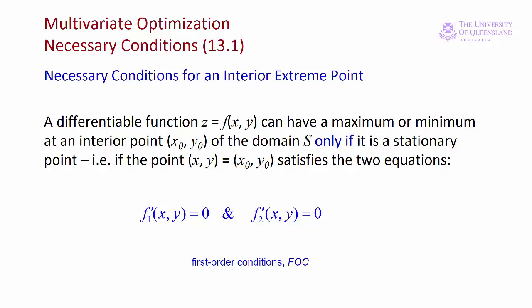So if we have a stationary point at x₀, y₀, when we evaluate our first partial derivatives at the values x₀, y₀, they'll both be equal to zero. We find the stationary points by first finding the first partial derivatives, setting them equal to zero, and then solving for x and y.